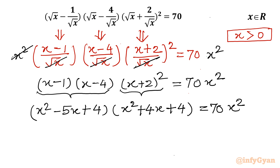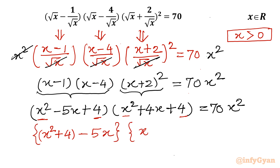Now I notice that (x² + 4) is common in both brackets. So I rewrite: the first bracket as (x² + 4 minus 5x) and the second bracket as (x² + 4 plus 4x), giving us (x² + 4 − 5x)(x² + 4 + 4x) = 70x².